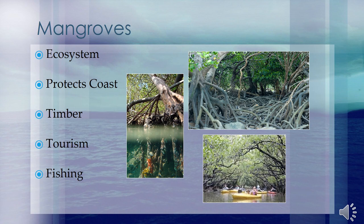Mangrove swamps have three major roles. One: coastal protection. They help stabilize and protect shorelines and reduce the devastating impact of natural disasters such as tsunamis and tropical storms, hurricanes, cyclones, and typhoons.